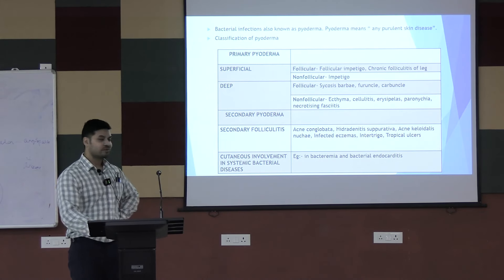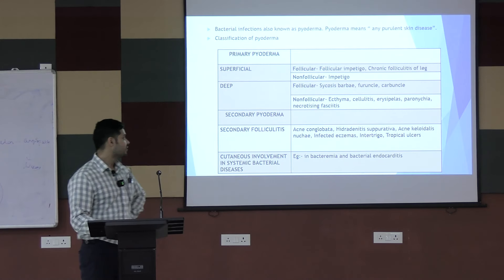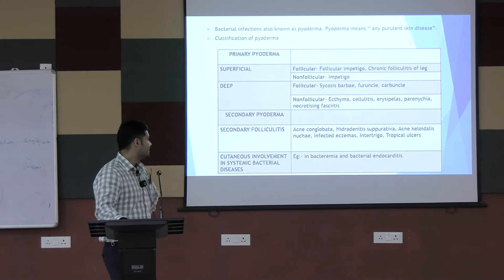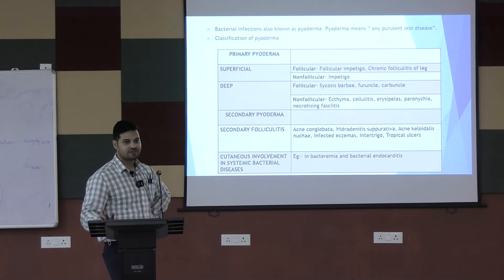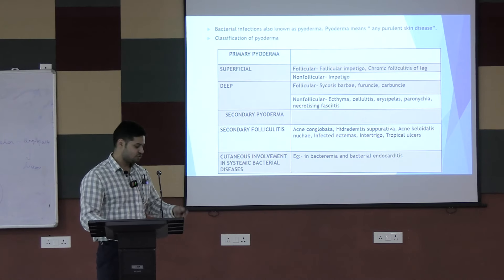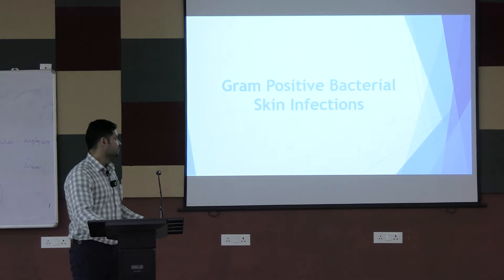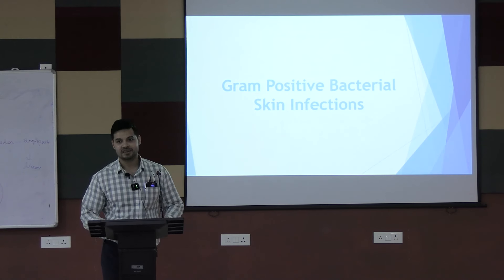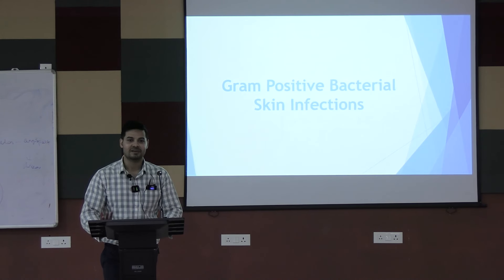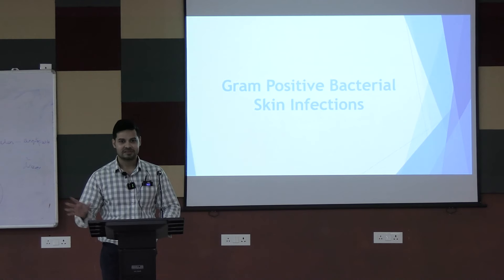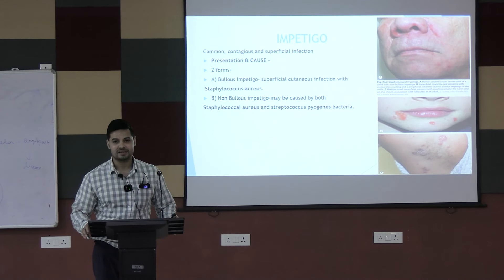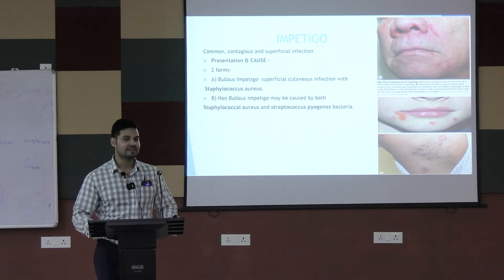In follicular superficial, you have follicular impetigo and chronic folliculitis of leg. In non-follicular, you see impetigo. In deeper categories, you see sycosis barbae, furuncles, carbuncles, ecthyma, cellulitis, and erysipelas. The most common causative agents of bacterial skin infections are Gram-positive bacteria — Staph aureus, Streptococcus, and Pseudomonas.